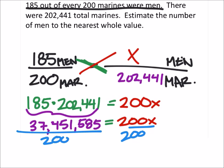The coefficient of x, 200 divided by 200 is 1. 1x is just really x. So when I divide that by 200, and this said to round to the nearest whole value of marine because we don't want a ninth of a marine.